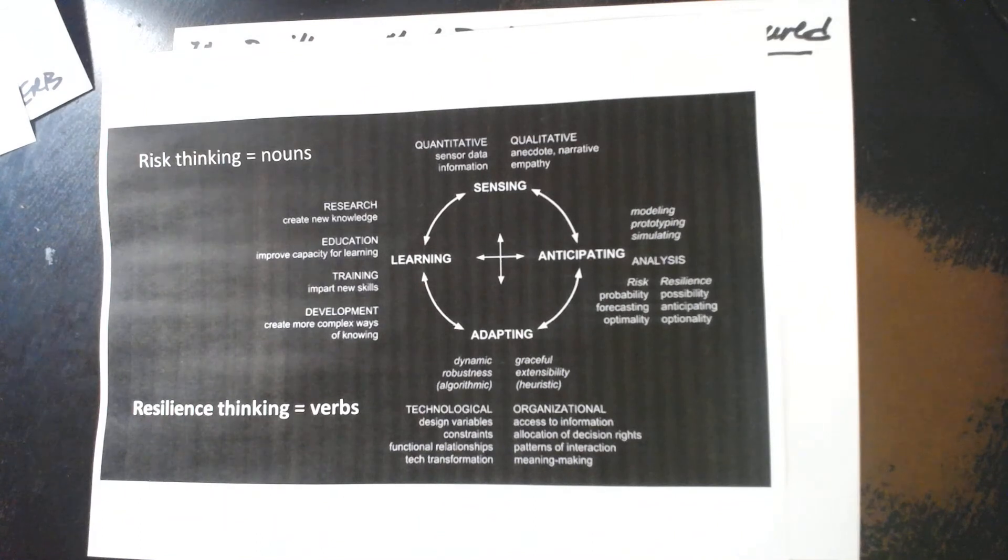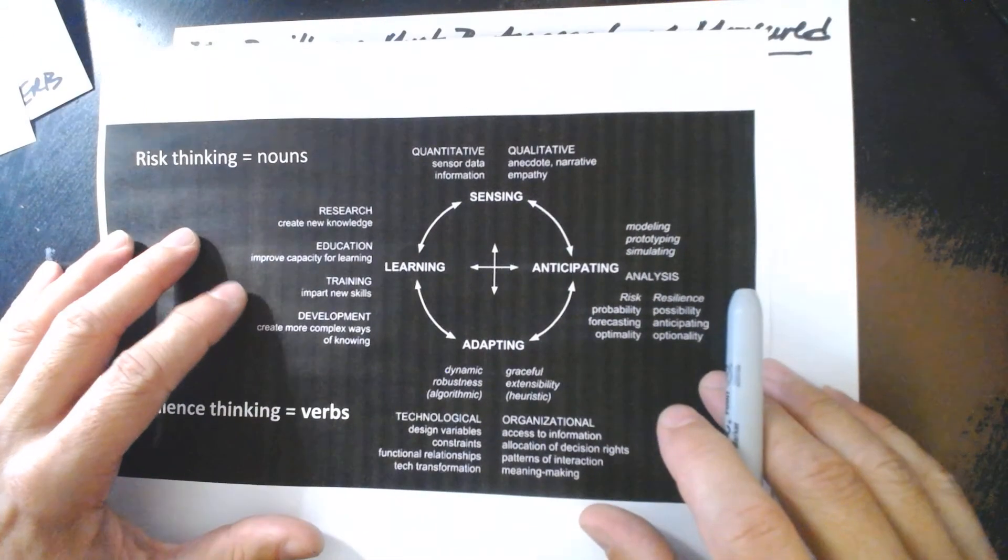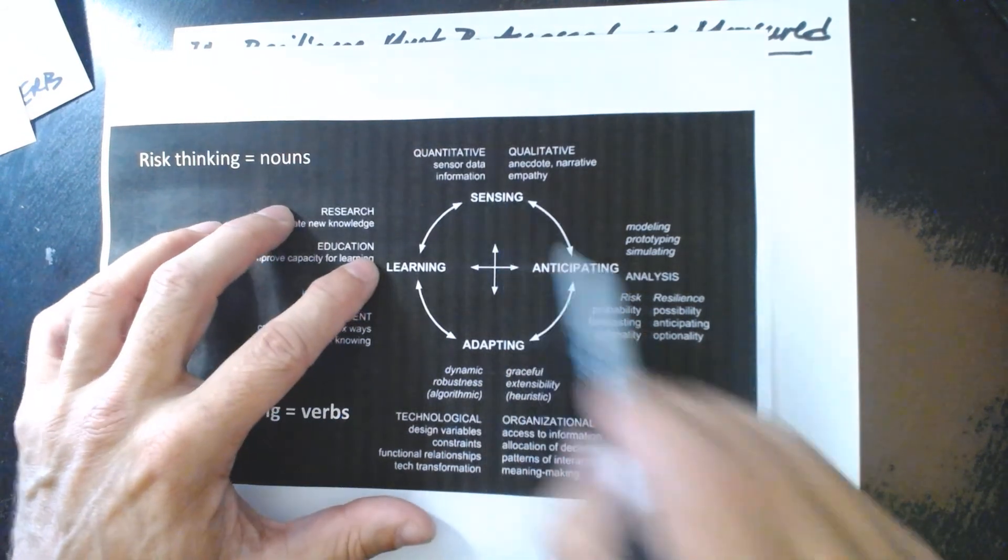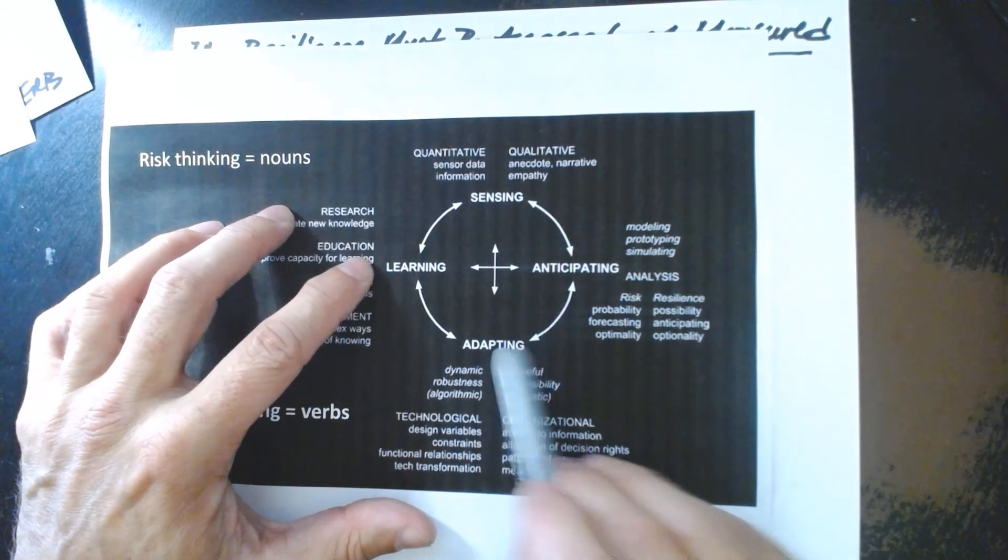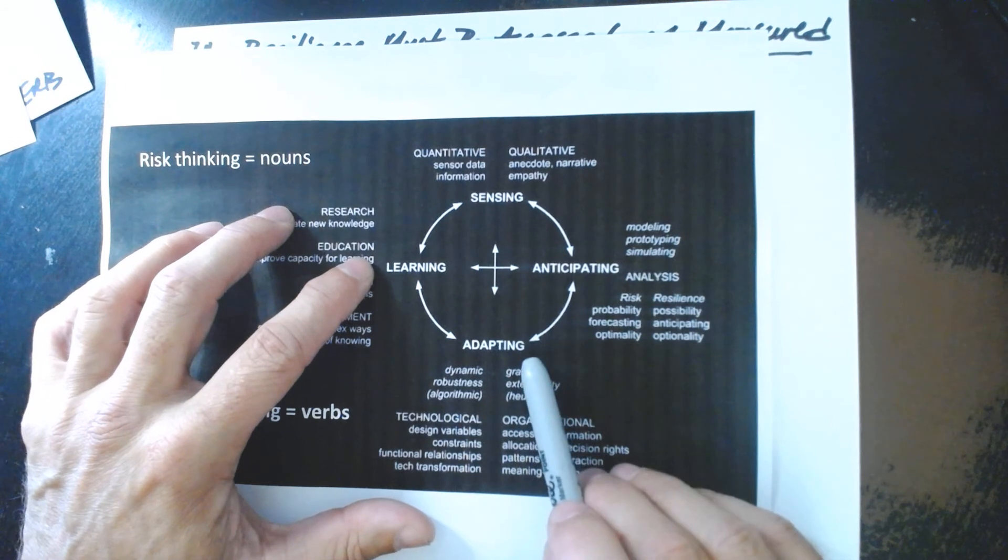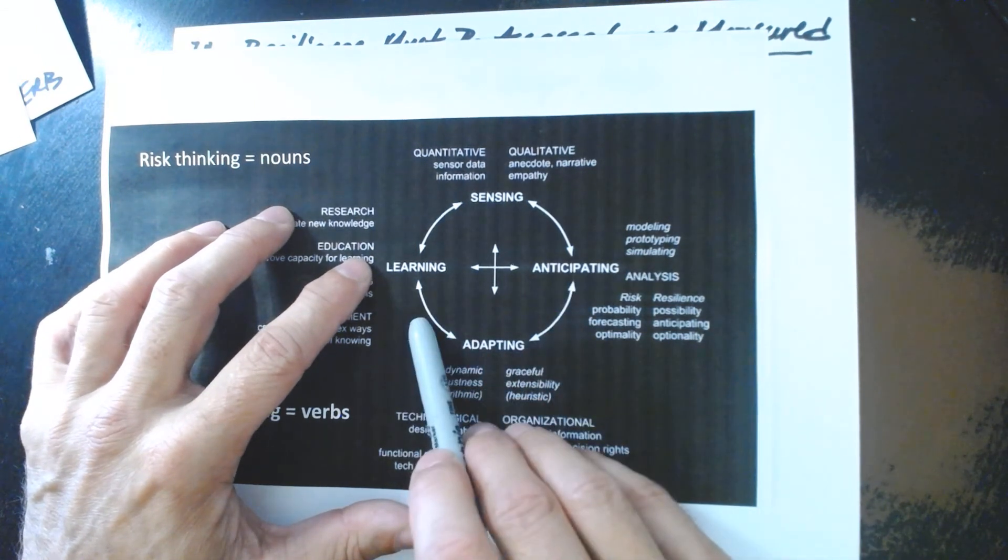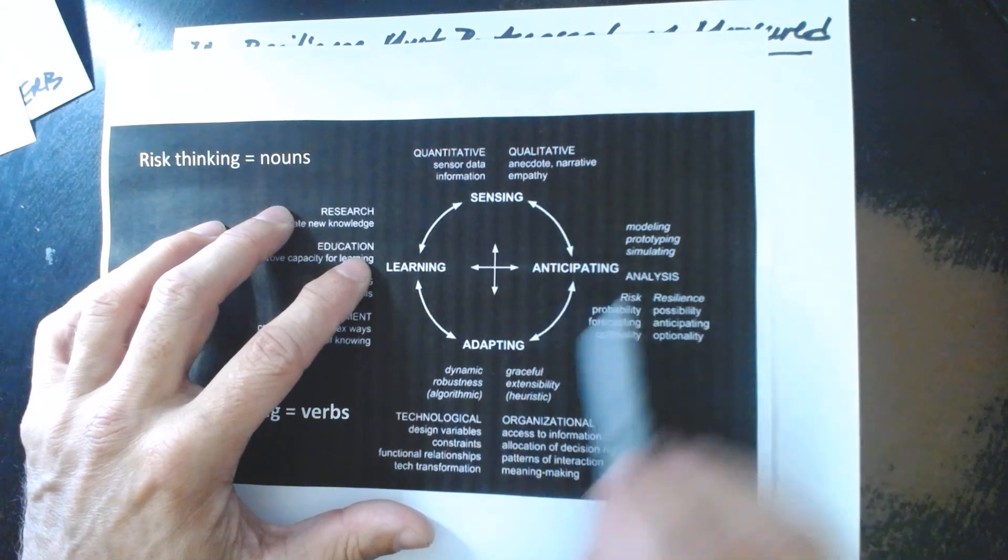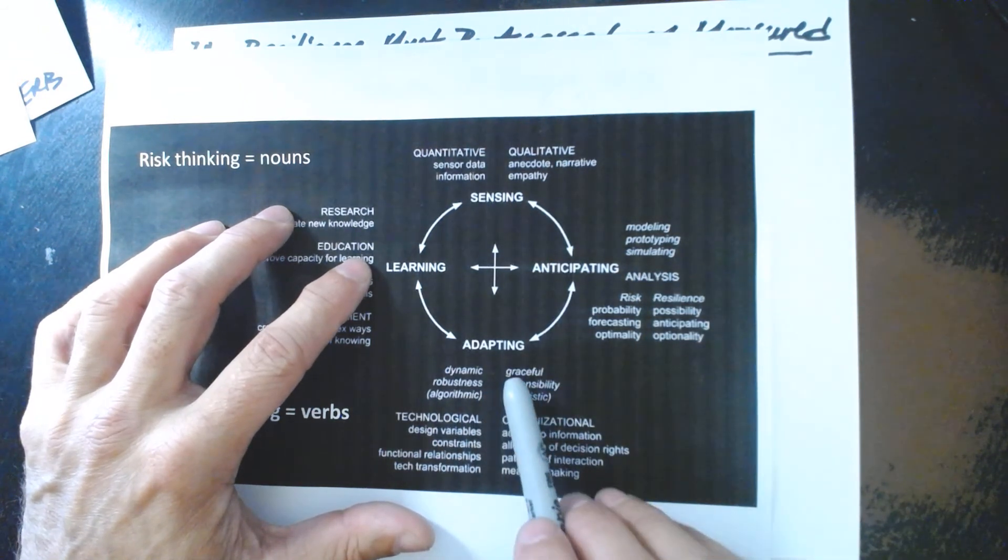There are four processes. We will call these four verbs, four things that we should be looking for. Sensing, anticipating, adapting, and learning. These are important in risk management and they're important in resilience as well. So I'm going to walk you through what to look for when you are assessing the verbs of resilience.